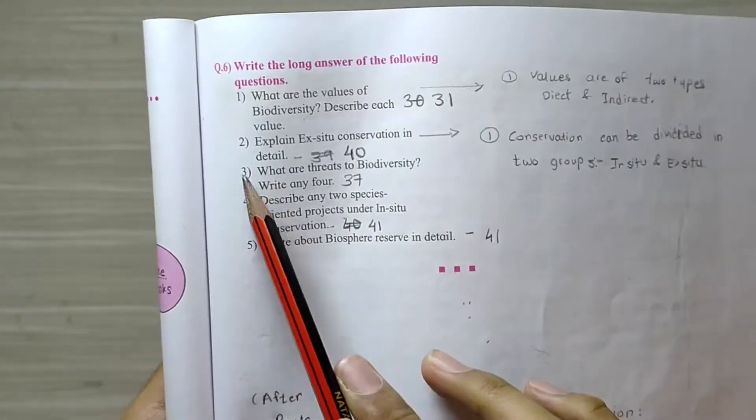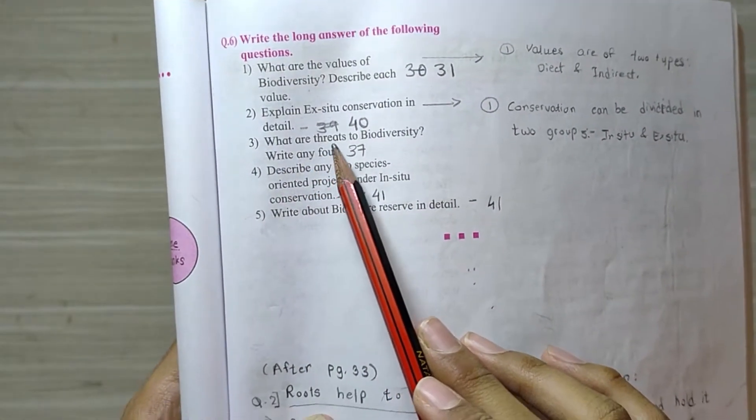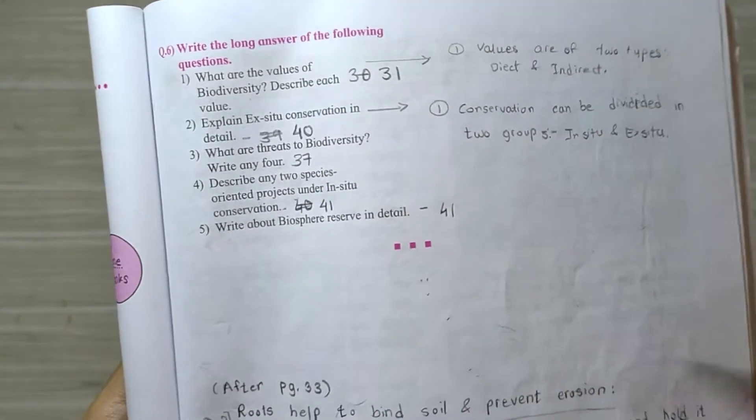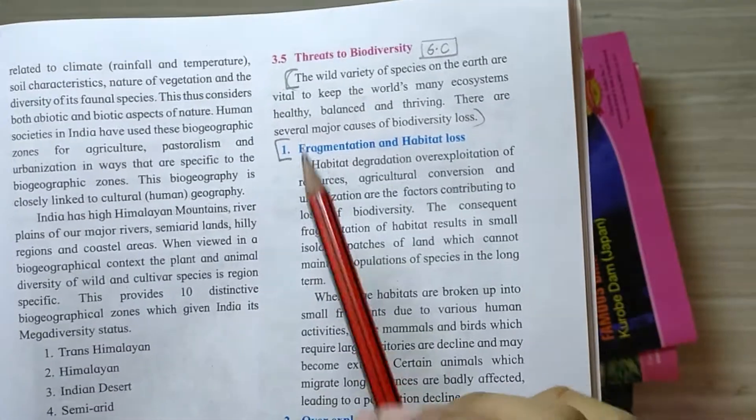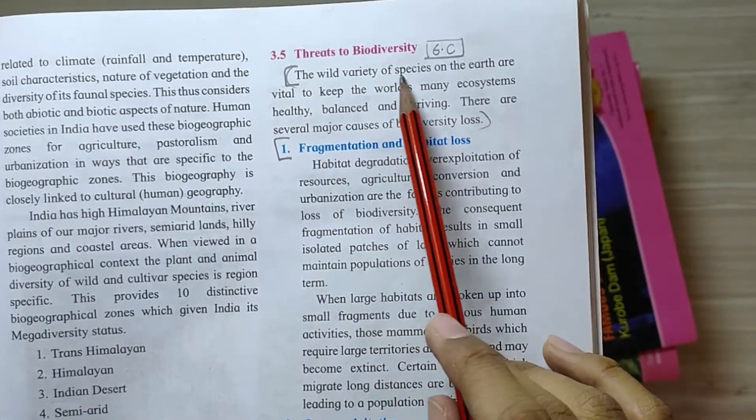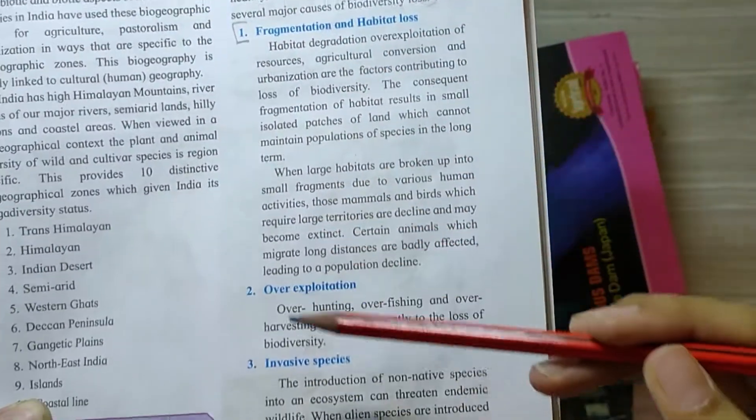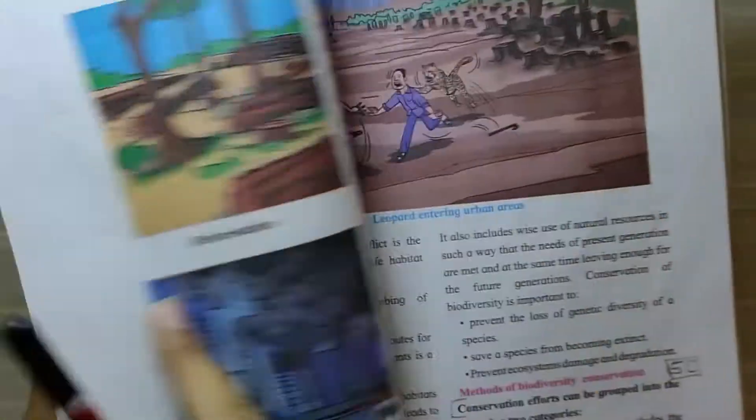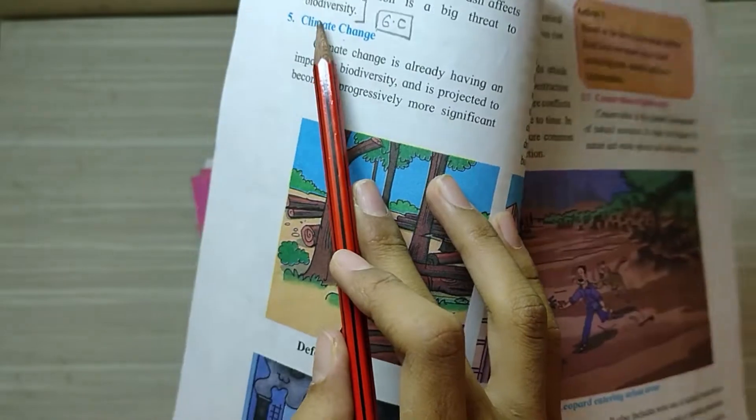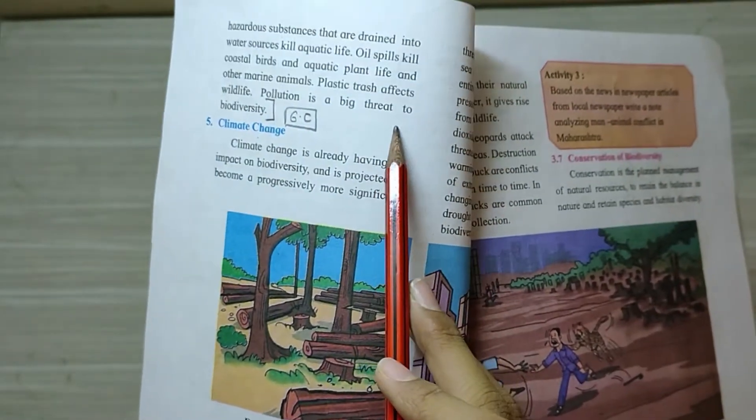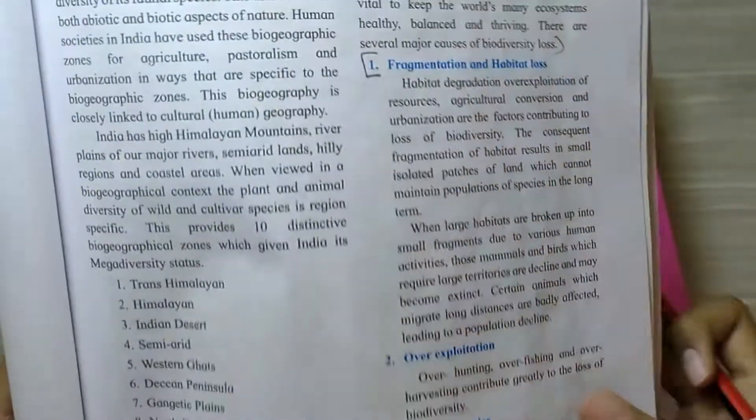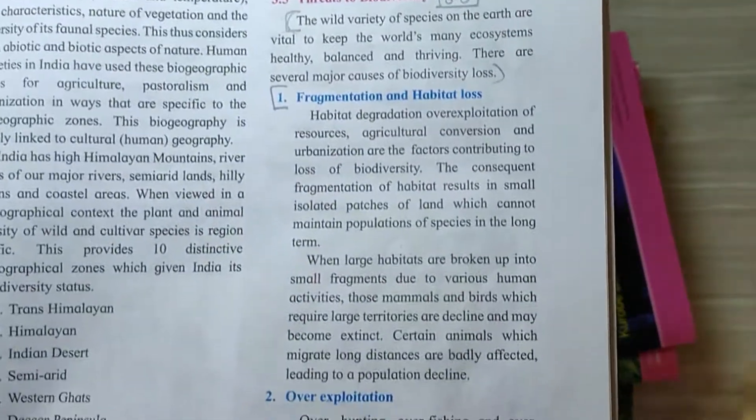The answer is till legal measures paragraph till illegal trade. Then the next question is question three, what are threats to biodiversity, write any four. Its answer is on page number 37. This answer starts here, the wild variety of species, from that to you can write till next page, pollution paragraph till pollution is a big threat to biodiversity.